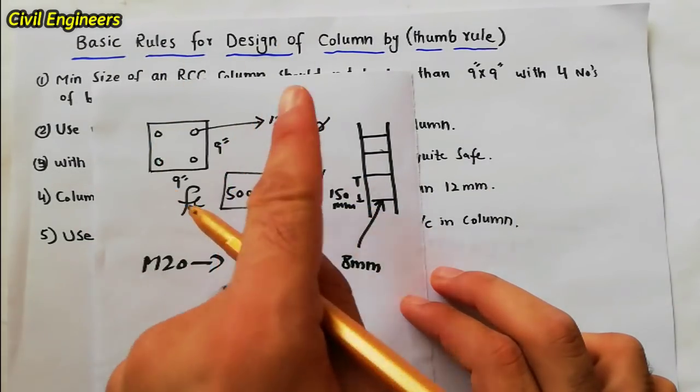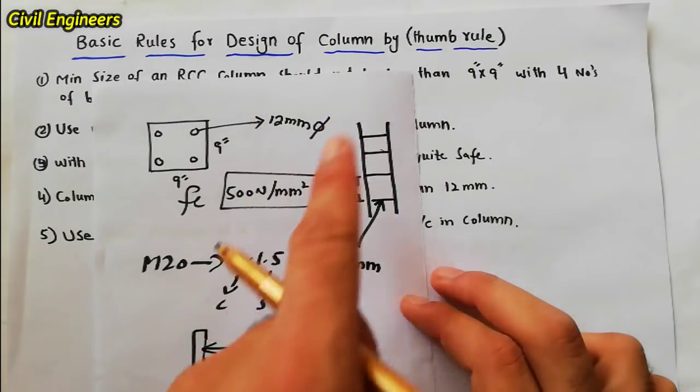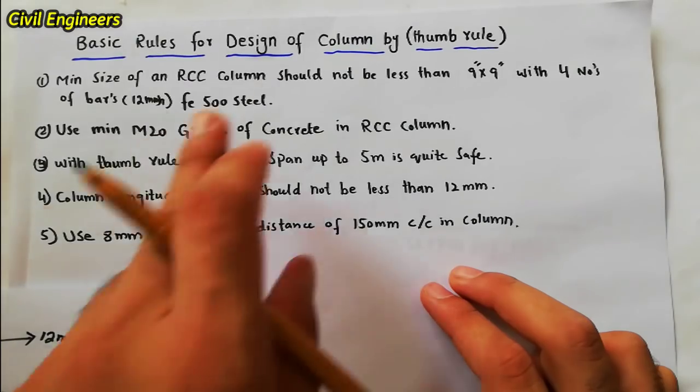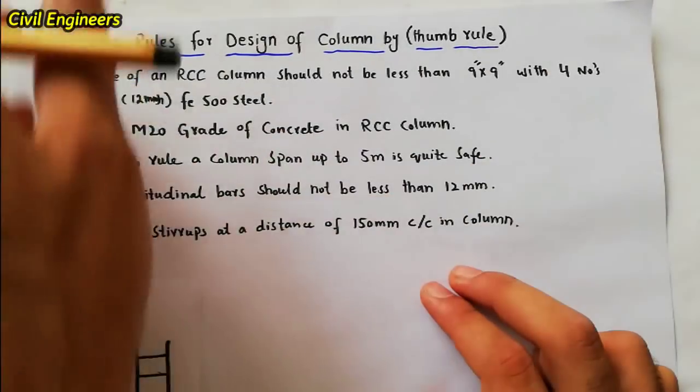So these are the important points for design of column. These are the basic rules for design of column by thumb rules. These are very important. So if you have any question you should comment so I will reply your answer.